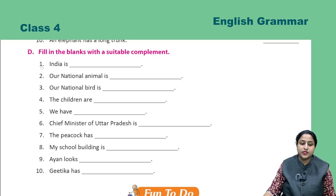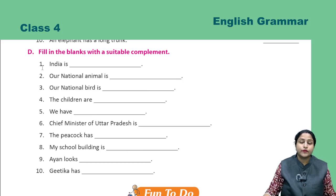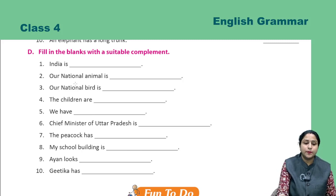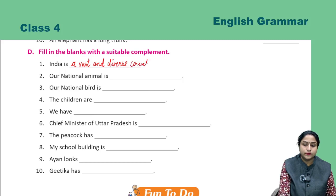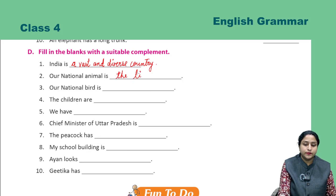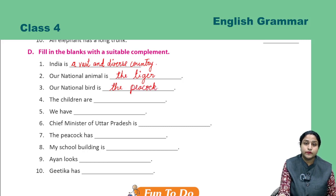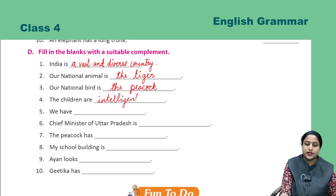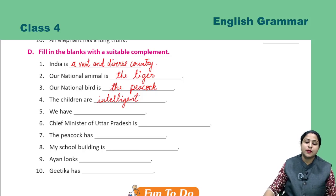Now the next exercise: fill in the blanks with a suitable complement. Some blanks are given — write whatever complement you feel completes the sentence. First: 'India is ___.' India is a vast and diverse country. Second: 'Our national animal is ___.' The tiger. Our national bird is the peacock. Next: 'The children are ___.' Intelligent — or you could write 'playing.' Just ensure the sentence makes sense. Complete the remaining parts similarly.